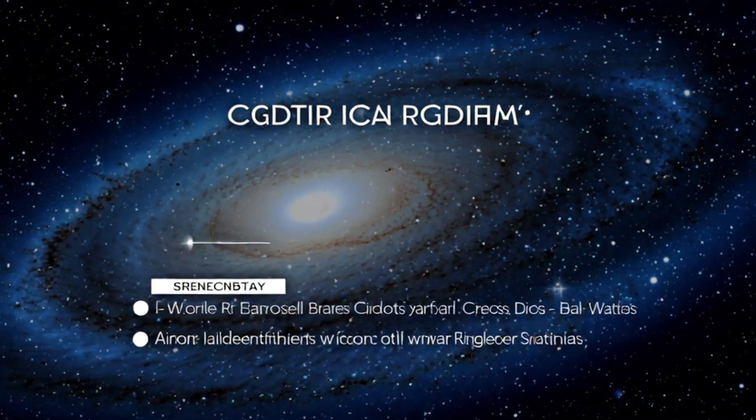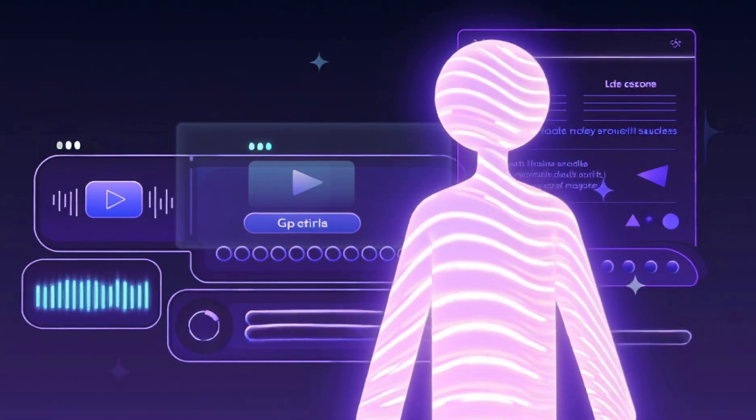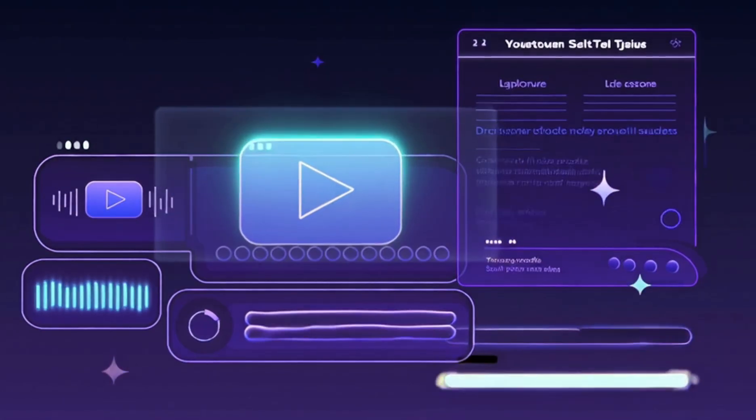Thanks for watching. Subscribe for more cosmic journeys. Up next: The TRAPPIST-1 system, a solar system with seven Earth-like worlds.